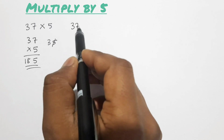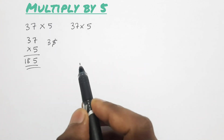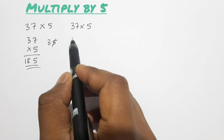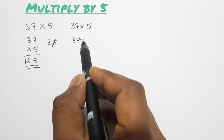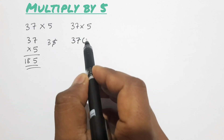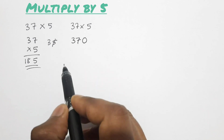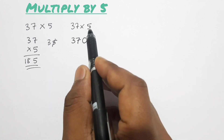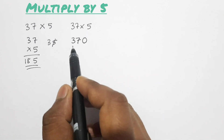In our shortcut method, instead of multiplying by 5, we first multiply the given number by 10. The multiplication by 10 is very easy — we just put a zero behind the number, so this gives us 370. Since 5 is half of 10, we are now going to divide this number by 2.